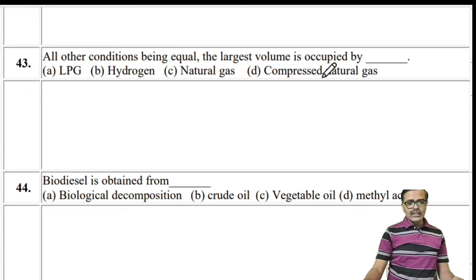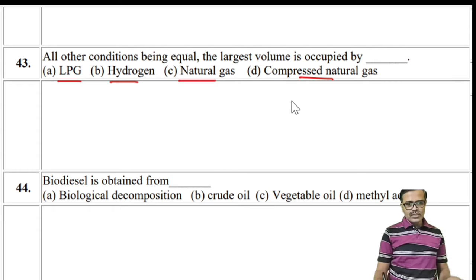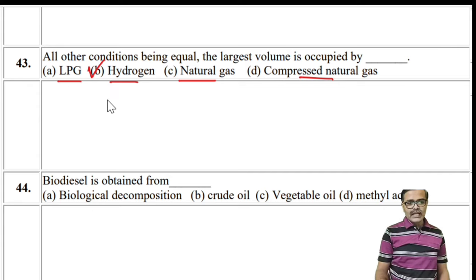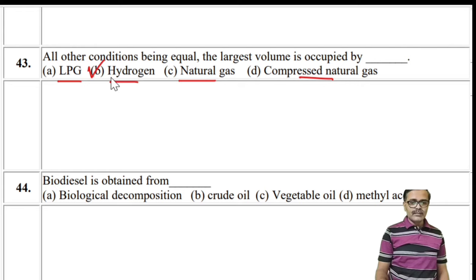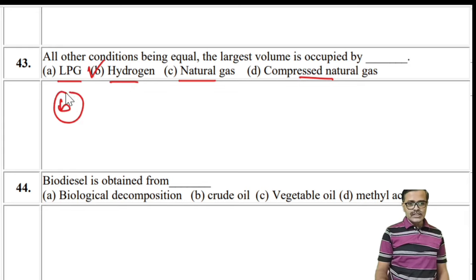All other conditions being equal, the largest volume is occupied by hydrogen gas. Hydrogen has the minimum molecular weight (2 g/mol); by Avogadro's law, one mole of any gas occupies 22.4 liters. So hydrogen, being lightest, requires the maximum volume. The answer is the second option: hydrogen.